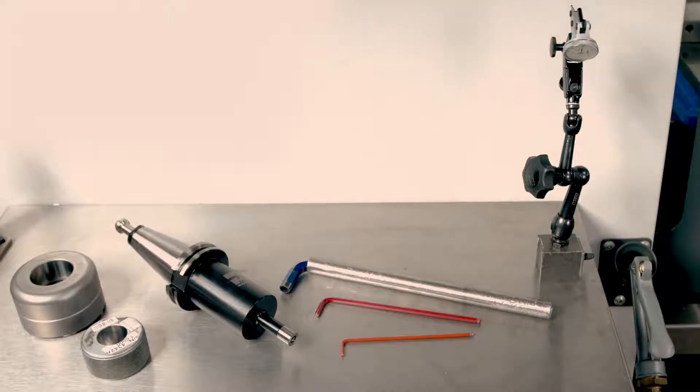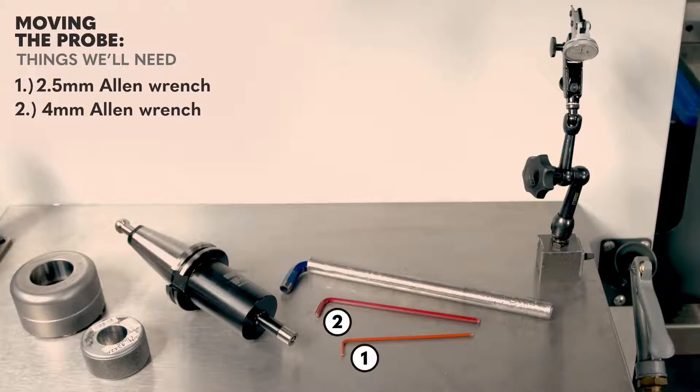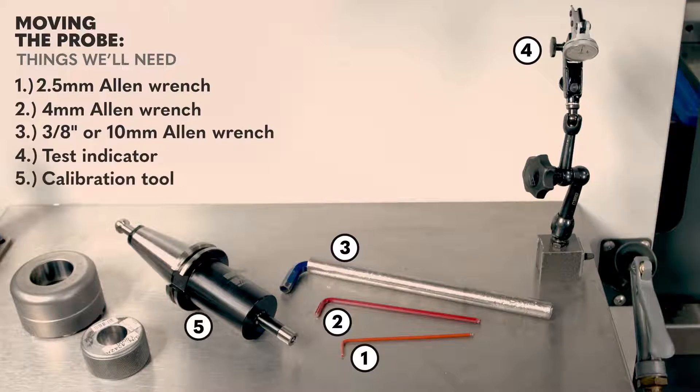To move our table probe over just a little bit, we just need a handful of tools. Two and a half millimeter Allen wrench, a four millimeter Allen wrench, and a three eighths Allen. We'll also make use of a 10th indicator and our probe calibration tool, which is just a tool with a known length and diameter.